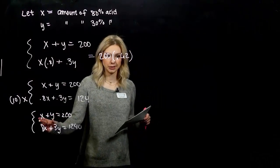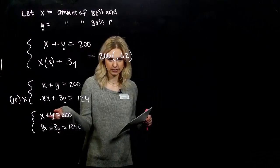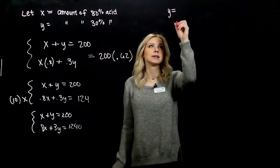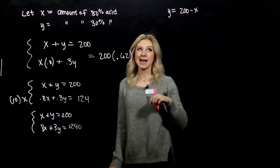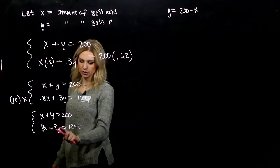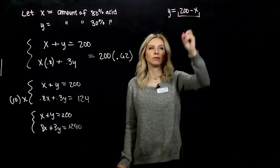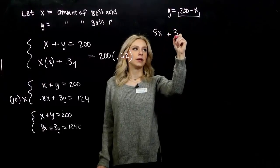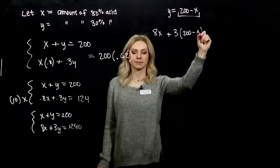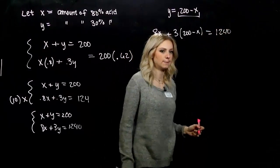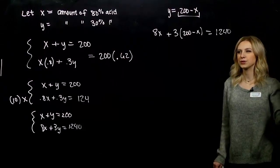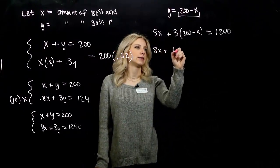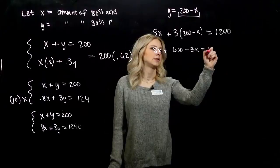I'm going to use the substitution method since I have two choices that are pretty nice to solve. I'll solve the first one for y. Subtract x from both sides, so y equals 200 minus x. Now wherever I see y in my second equation, I can input what I know it's equivalent to. So 8x plus 3 times (200 minus x) equals 1240.